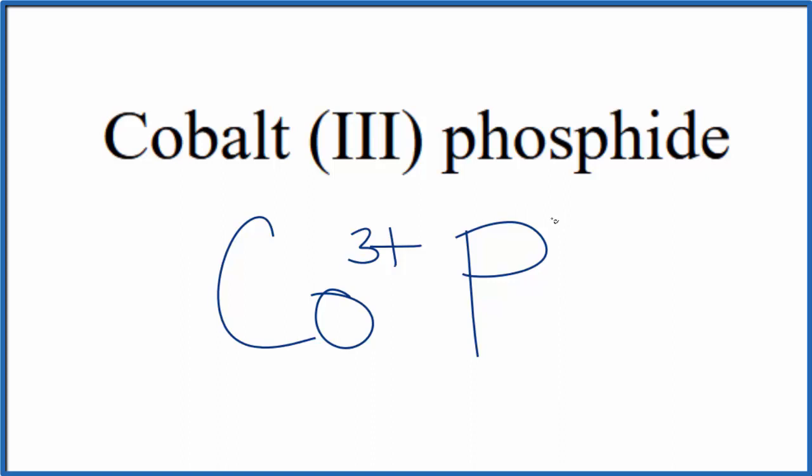Phosphorus forms the phosphide ion, which is 3-. So because this cobalt(III) is neutral, it doesn't say ion after it, these numbers need to add up to 0. So 3+, 3-, that adds up to 0, gives us a net charge of 0.